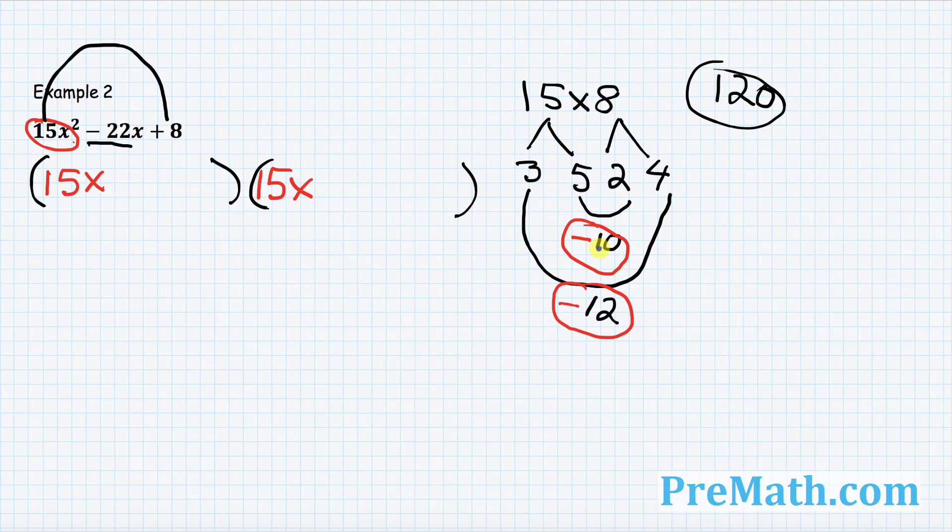So these are going to be our numbers that we're going to write down in our parentheses. So let's go ahead and write down negative 10 in the first parentheses and negative 12 in the second parentheses. Our final step is, look at this, 15 and 10. So these numbers are divisible by 5 at the same time. And likewise, 15 and 12 are divisible by 3 at the same time.